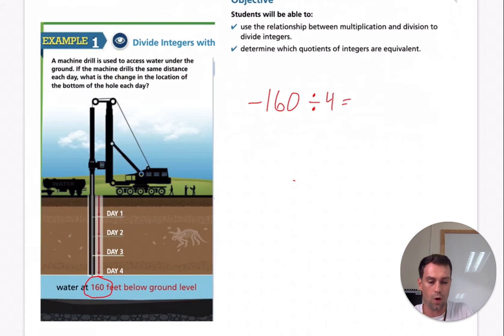So we know that at the very end it will be down below the ground at negative 160 feet. How many days will it take? Well, we know that we can divide that by four. It's telling us how many parts it would be. So we are wanting to know after day one, day two, day three, day four. So negative 160 divided by four.